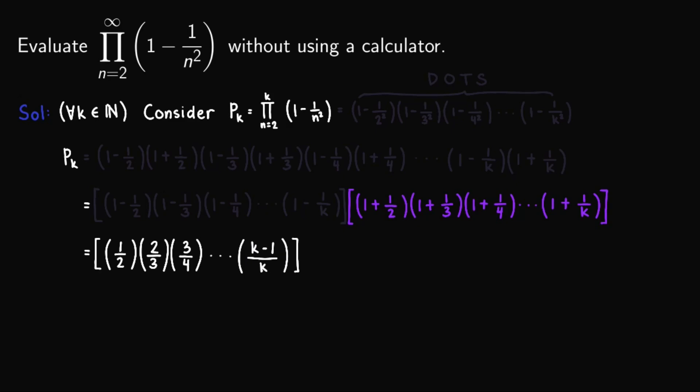For the next group, we do the same, so I will leave that to you to verify that this is equal to 3 halves times 4 thirds times 5 over 4, and so on times k plus 1 over k to obtain this.